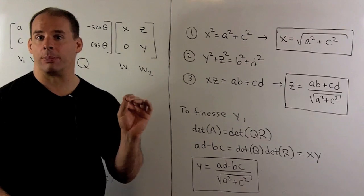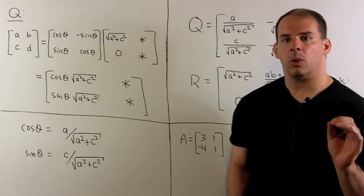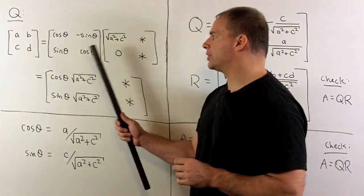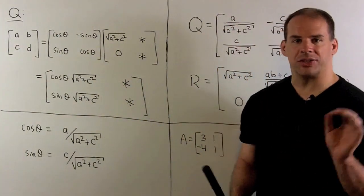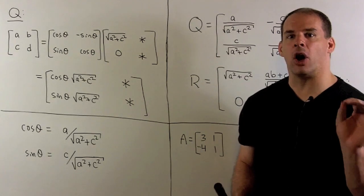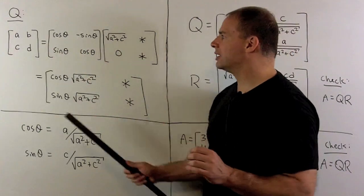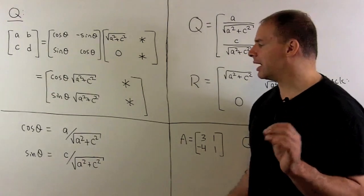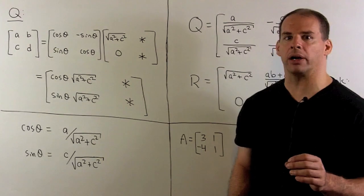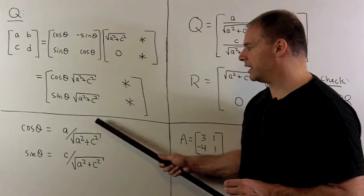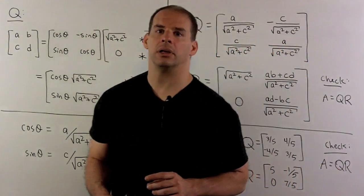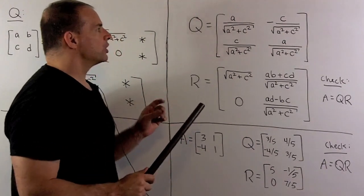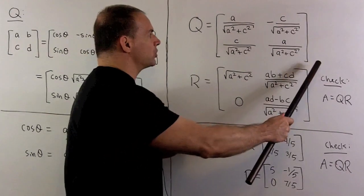That gives us our entries for the upper triangular matrix R. Once we have the entries for R, the entries of Q follow immediately. Taking the product A = Q times R and using the first column of R, we get cosine theta equals A over the square root of A squared plus C squared, and sine theta equals C over the square root of A squared plus C squared. You should check that the sum of the squares of these two equals 1, that Q is orthogonal with determinant 1, and that R is upper triangular with positive upper left-hand corner entry.